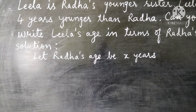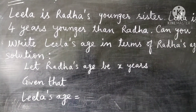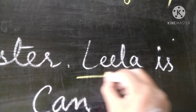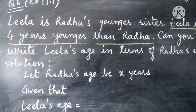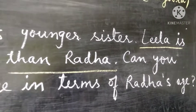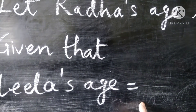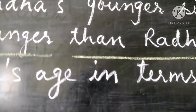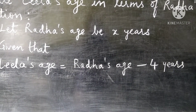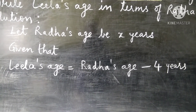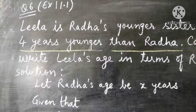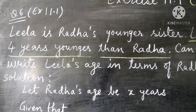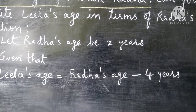We assume that Radha's age is x years. Leela is 4 years younger than Radha. Leela's age is equal to 4 years younger than Radha, which means Radha's age minus 4 years. So Leela's age is equal to Radha's age minus 4 years, that is Radha se 4 saal kam hai.